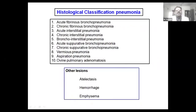The classification of pneumonia includes: acute fibrinous bronchopneumonia, chronic fibrinous bronchopneumonia, acute interstitial pneumonia, chronic interstitial pneumonia, broncho-interstitial pneumonia, acute suppurative bronchopneumonia, chronic suppurative bronchopneumonia, verminous pneumonia, aspiration pneumonia, and ovine pulmonary adenomatosis. Along with these, other lesions include atelectasis of lungs, hemorrhage, and emphysema.